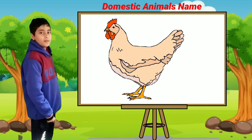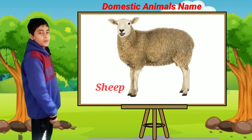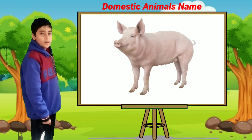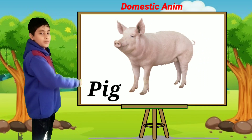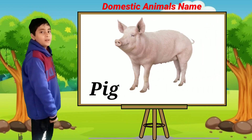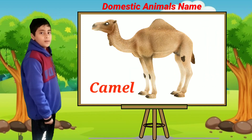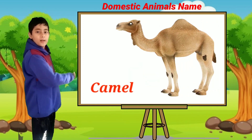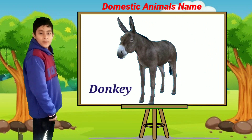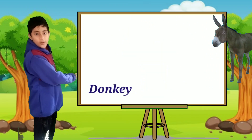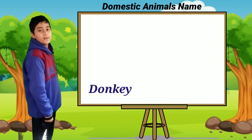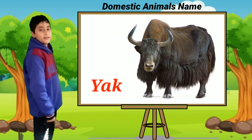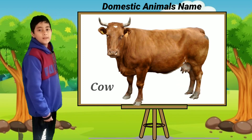This is a hen. This is a sheep. This is a pig. This is a camel. This is a donkey. This is a foal.